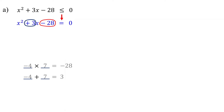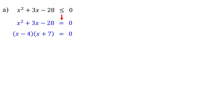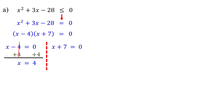These numbers are negative 4 and 7. So, when we factor this quadratic equation, it becomes x minus 4 times x plus 7, which equals 0. Then, set each factor equal to 0 and solve for x. Solving the first equation, we get x equals 4. Solving the second equation, we get x equals negative 7.